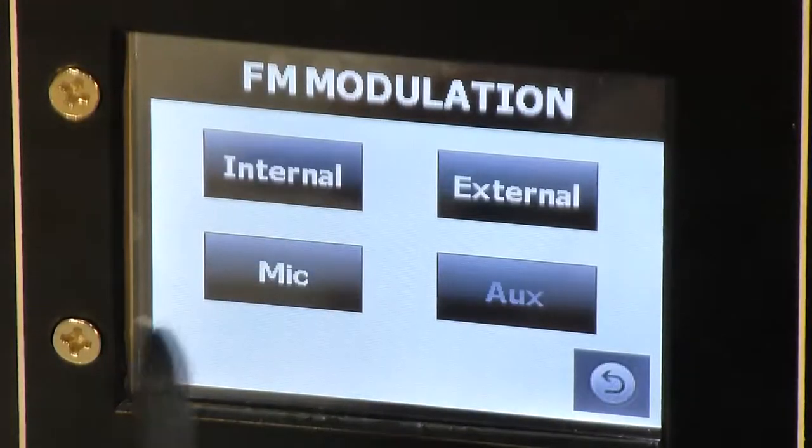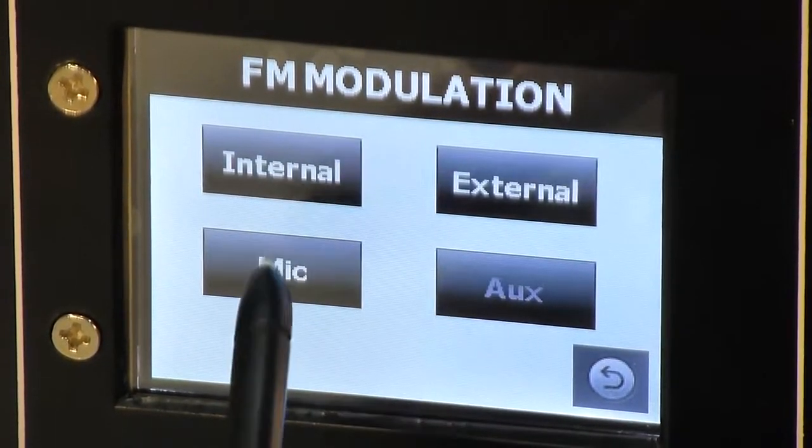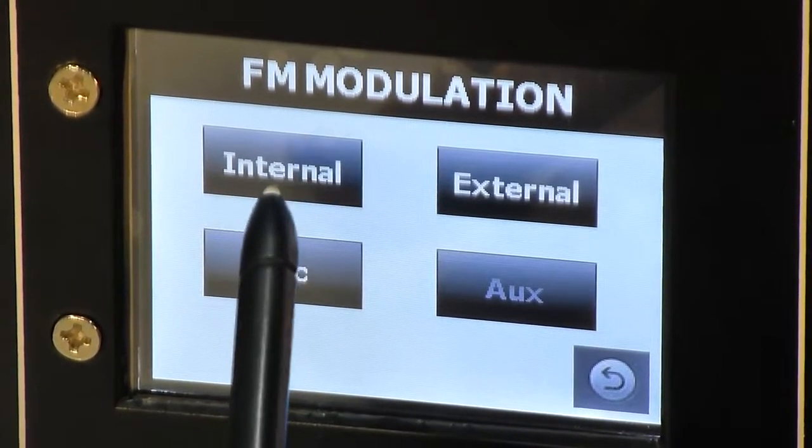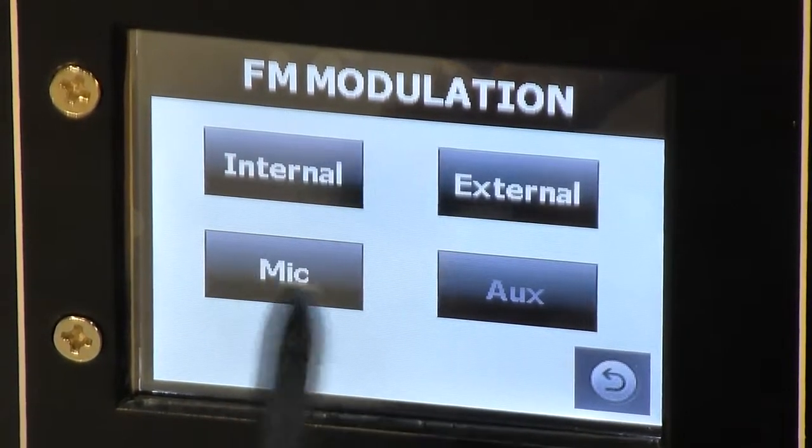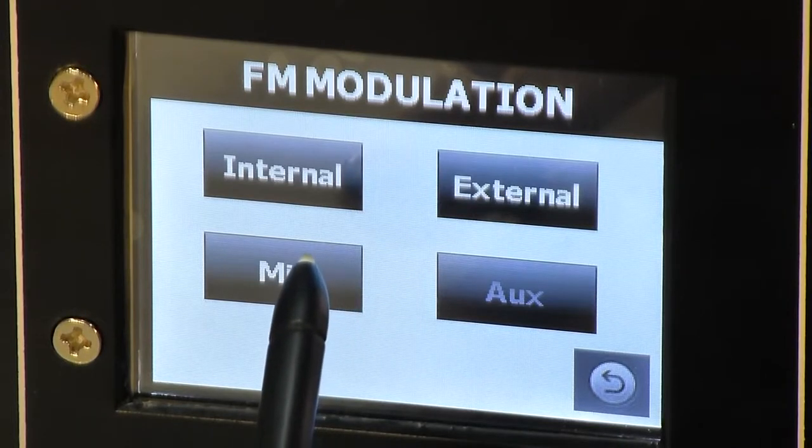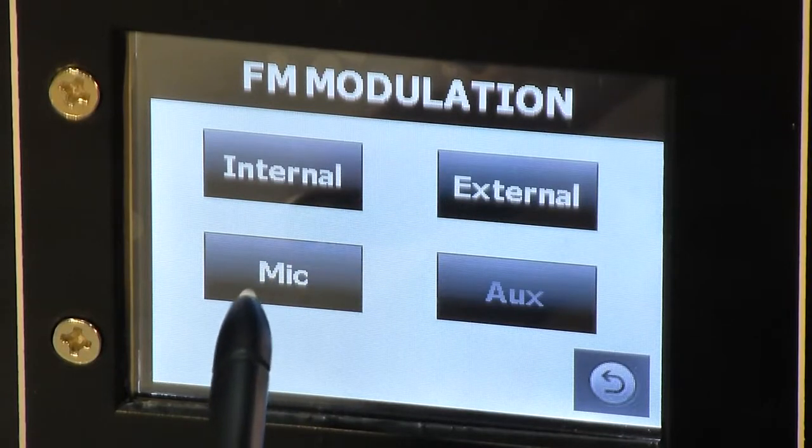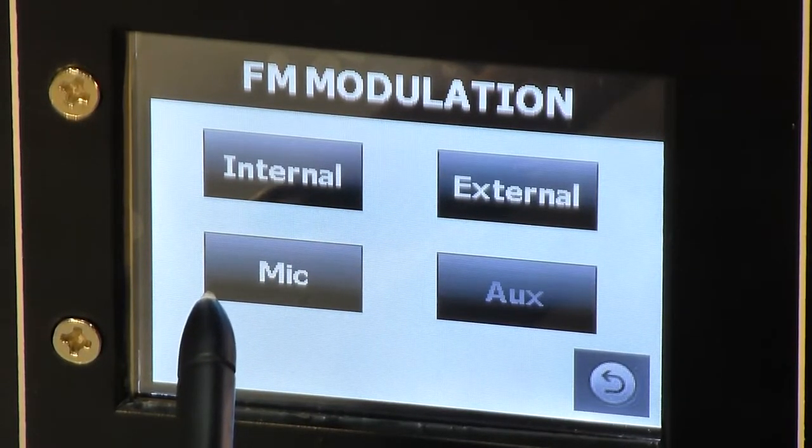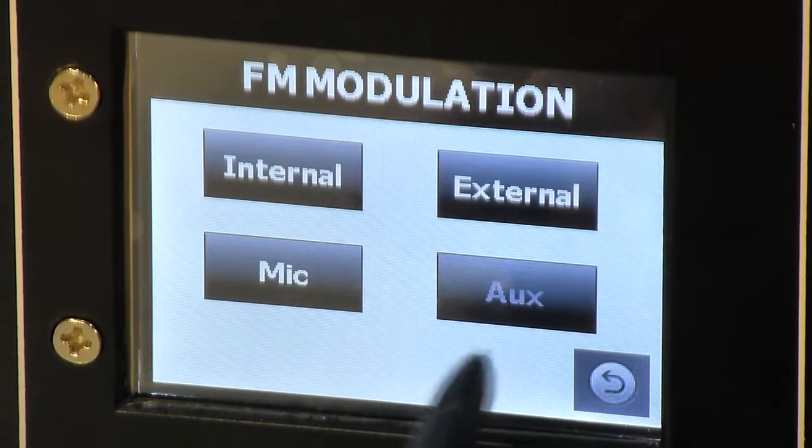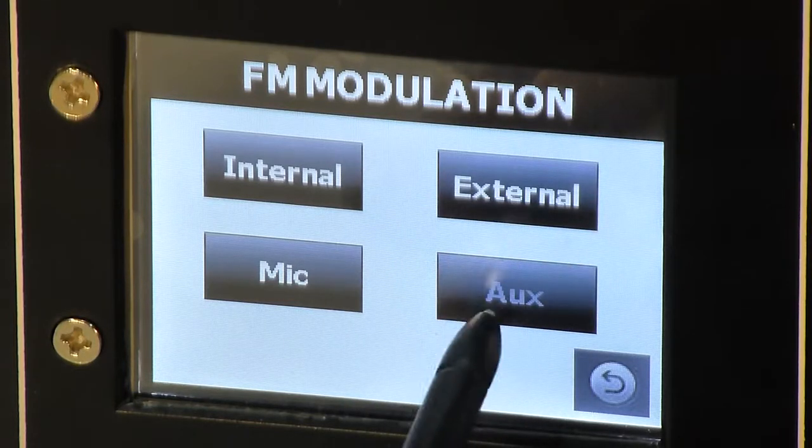For frequency modulation, you see four options: internal modulation, external modulation, mic or aux. For internal modulation, output will be internally frequency modulated with 1 kHz signal. For external, you can connect an external signal source. For mic, output will be modulated with the sound wave received through the mic. And the fourth option is not available in this particular version, so you can see that this particular option is greyed out.